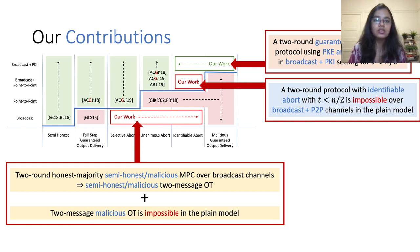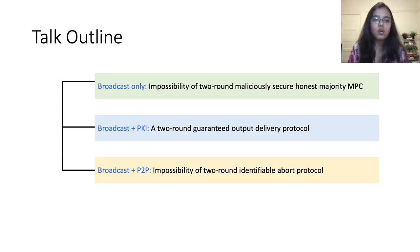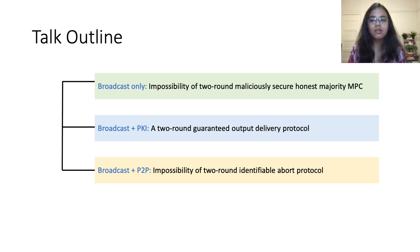For this talk, I am only going to focus on these three results. The rest of the talk will be organized as follows: I will start by discussing our impossibility result in the broadcast-only model, then talk about the guaranteed output delivery protocol in the broadcast plus PKI model, and finally conclude with the impossibility of identifiable abort in the broadcast plus P2P model.